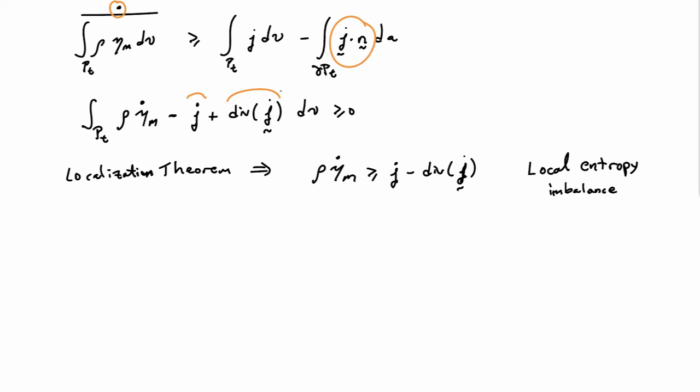I can now apply the localization theorem to this relationship, and that will tell me that ρηm dot is greater or equal to little j minus the divergence of the vector j. This is the local entropy imbalance relationship.